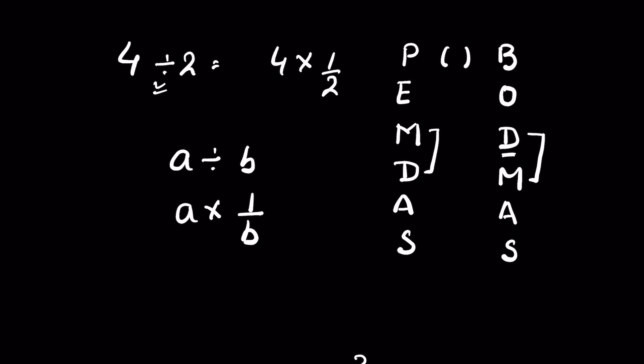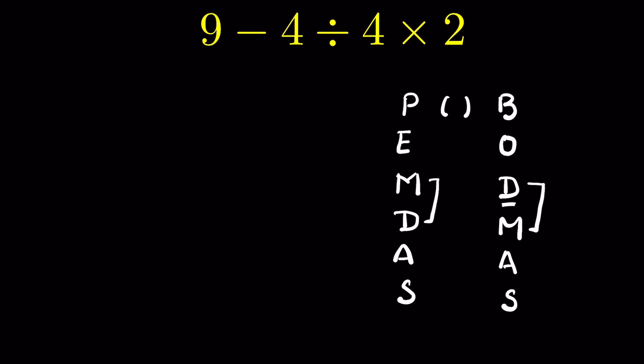A divided by B means A multiplied by the reciprocal of B, or 1 upon B. So 4 divided by 2 means 4 multiplied by 1 upon 2. Division is nothing but the reverse of multiplication. So when you have to choose between multiplication and division in BODMAS or PEMDAS, you have to follow the rule of left to right.